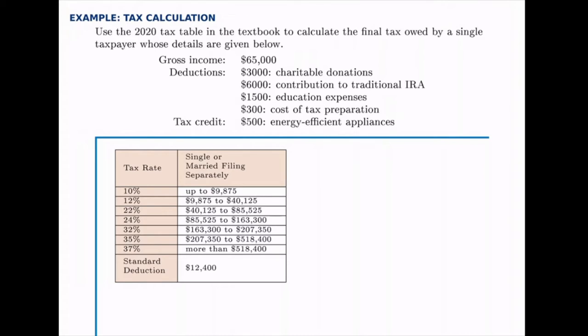And then we're given some deductions and a tax credit. Now remember, to calculate the tax owed, we start with the gross income, we subtract the deductions first — and we'll talk more about that in a second —